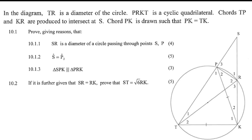In the diagram, TR is a diameter. PRKT is a cyclic quadrilateral. They talk about the chords and then tell us that PK, which is this entire length, is the same as TK. They have the same length and you can see that we've got equal things over there.